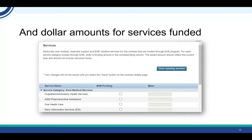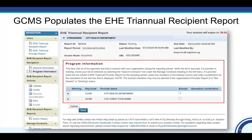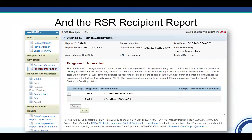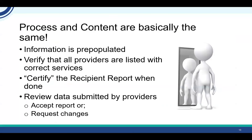GCMS also collects basic information about the contract, service categories funded by the grant, as well as the amount for each service category. The contracts that you enter in GCMS populate the recipient report automatically — you don't have to re-enter the information. What you're seeing here is the EHE triannual recipient report. You'll see a list of agencies funded under your grant in the program information section. The exact same information is also used to populate the RSR recipient report.